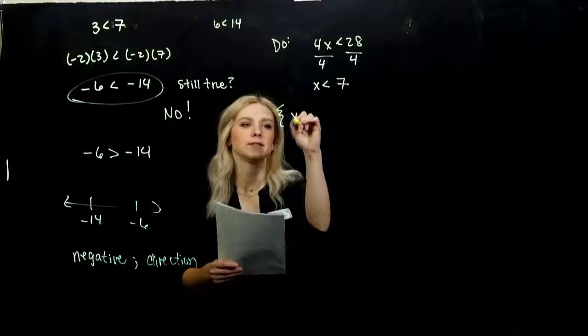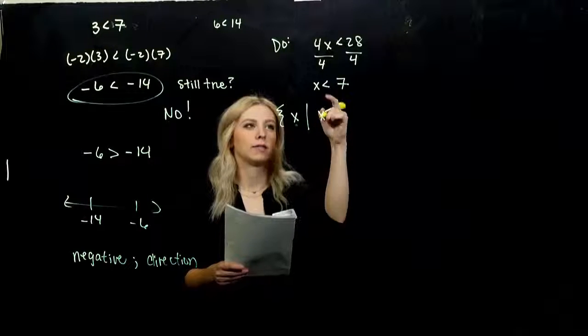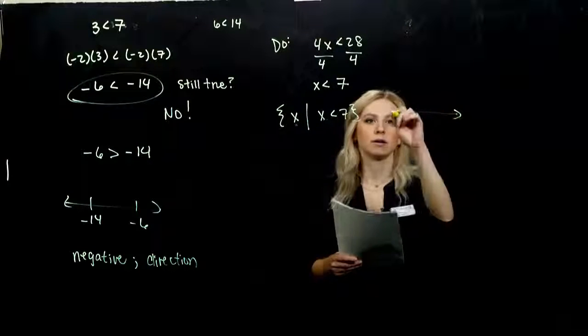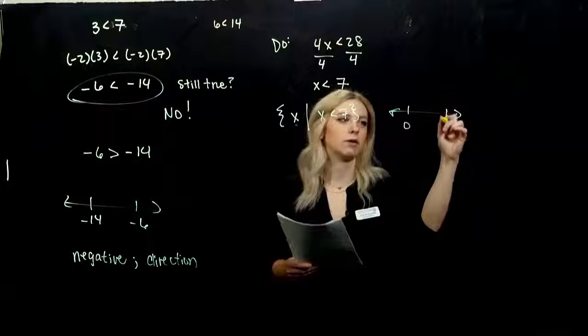So again, set builder notation. All x, such that this holds true. And with an inequality on a number line, what are we looking at? Quick and dirty one. Here's 0. Here's 7.